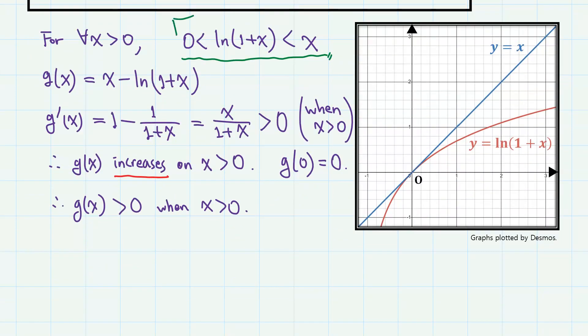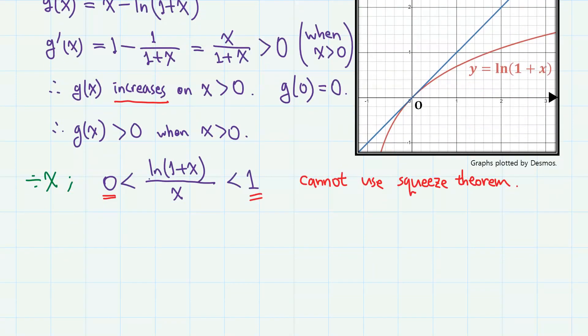However, this inequality is not useful, since if we divide each side by x, which is a positive real number in this case, we only yield ln(1 + x)/x is greater than 0 and less than 1, in which the squeeze theorem is not applicable, because the leftmost side and the rightmost side converge to different values. Therefore, we need a stronger condition than this.